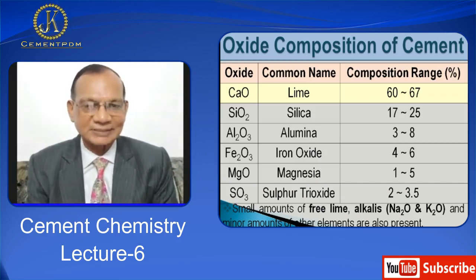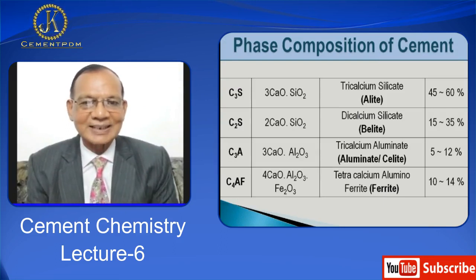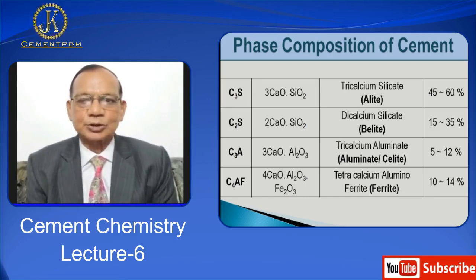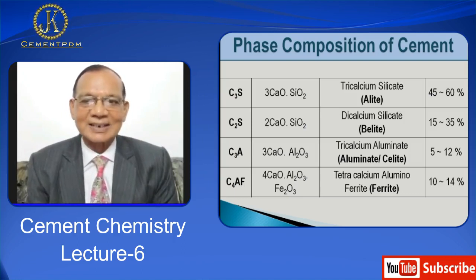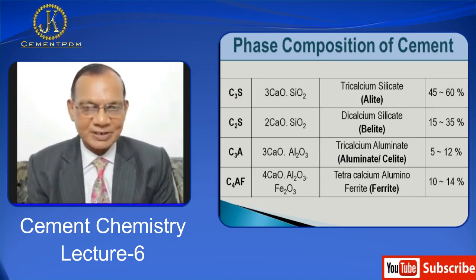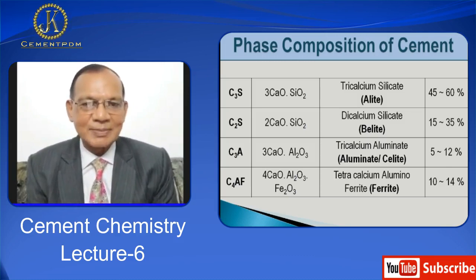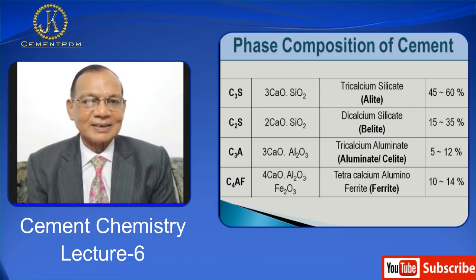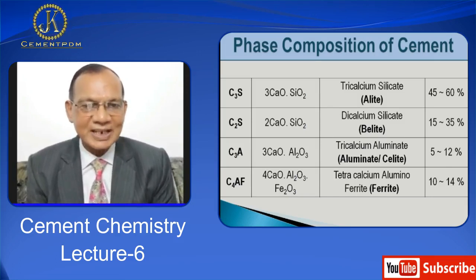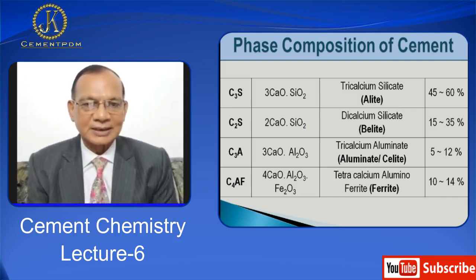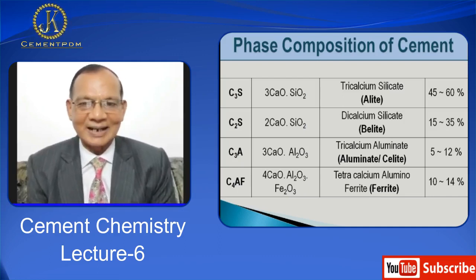These oxides combine and form phases or minerals. The four main compounds formed in cement are C3S, C2S, C3A, and C4AF. C3S in long notation is 3CaO·SiO2, that is tricalcium silicate. In industrial cement or clinker, C3S is not in pure form — it has substitution of other oxides such as MgO, alumina, iron oxide, etc. This impure form is referred to as alite.